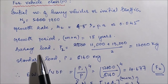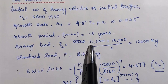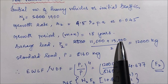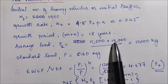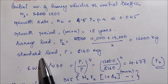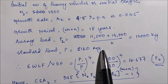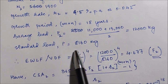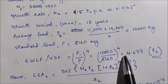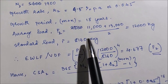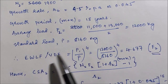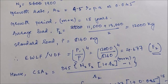The average load P2 is the average of the two load values given in the question: 11,000 to 13,000 kg divided by 2, which gives 12,000 kg. The standard axle load is 8160 kg, as used previously. Substituting P2 and the standard load into the fourth power equation gives us F2, or EWLF2, or VDF2.